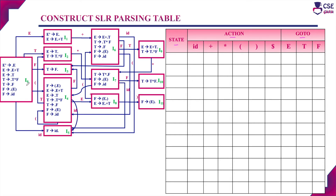The states are represented as I0, I1, I2, I3, and so on. We will enter state numbers starting from I0 to I11, so there are 12 states from 0 to 11. The action part is for transitions from one state to another with terminal symbols — those entries are made as shift moves. The go-to part is for transitions with non-terminal symbols (variables), and those entries are the destination state number.